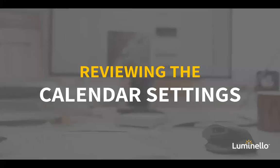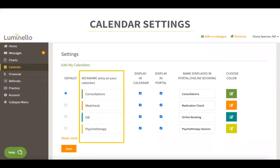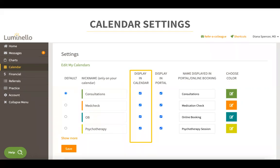Let's take a look at the calendar settings. In your calendar settings, you can color code your appointments, name your calendars, set a default time for appointments, and enable or disable appointment confirmation and reminder notifications, among other settings. To get to your calendar settings screen, go to calendar and click on settings. In the nickname section, you can set a nickname for each of your calendars — the nickname would only show up on your end, meaning patients will not see this. The display in calendar box — check this if you would like to display this calendar in your own calendar view.